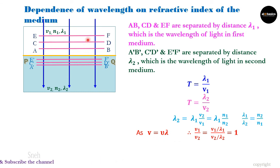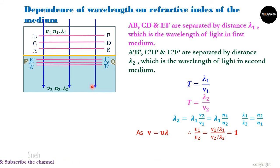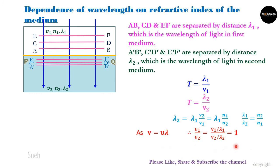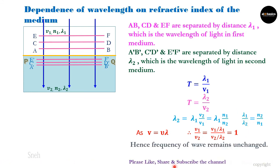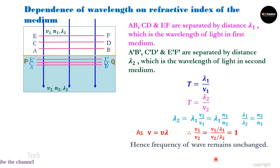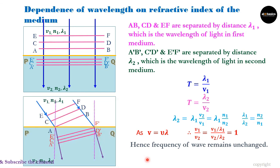Frequency in the first medium and frequency in the second medium are the same. Frequency does not change during the process of refraction — when the medium changes, frequency remains constant. What is changing is wavelength and speed, but frequency remains the same. Hence, frequency of the wave remains unchanged, and this can be proved for oblique incidence also.